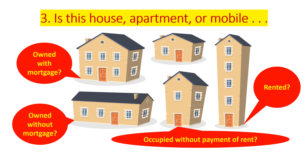Question three asks: 'Is this house, apartment, or mobile home owned with a mortgage, owned without a mortgage, occupied without payment of rent, or rented?' On the N-400, people are not asked directly how they pay for their home, but indirectly they are — because people do file taxes, and when you file taxes you reference property tax paid, renter's credit, and similar information. That kind of information comes up indirectly through the taxes you pay as part of your responsibility as an American citizen.